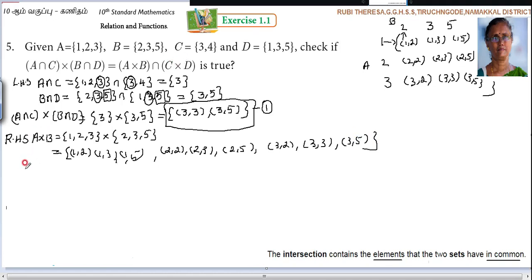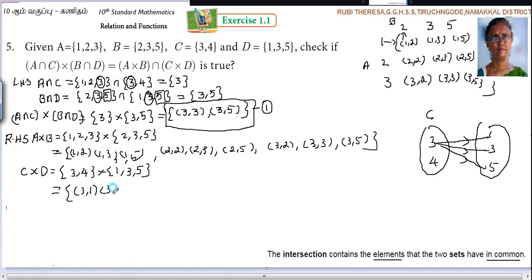Next what you should find out? C cross D. What is C? 3, 4. What is D? 1, 3, 5. With the help of arrow diagram also you can find out. That also just let me teach. This is C. 3, 4. Next. 1, 3, 5. First 3 is paired with 1, 3, 5. So 3, 1. 3, 3. 3, 5. Next again 4. 4 is paired with 1. 4, 3, and 4, 5.